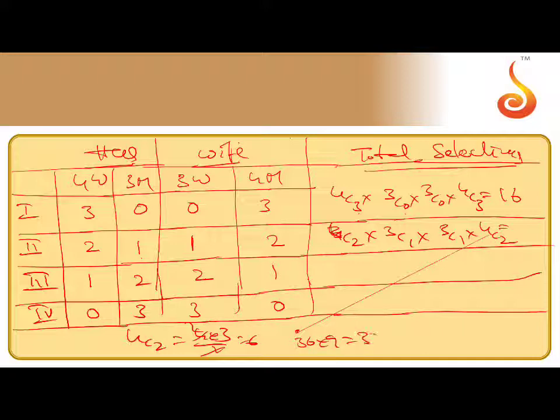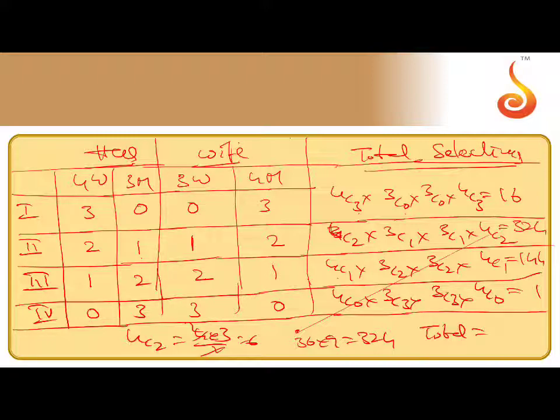324 comes here. Next 4C1 into 3C2 into 3C2 into 4C1. So 3C2 into 3C2, 4C1 into 4C1, 4C1 that gives everything one only comes here. That means total you can add all the things, total will be 485.